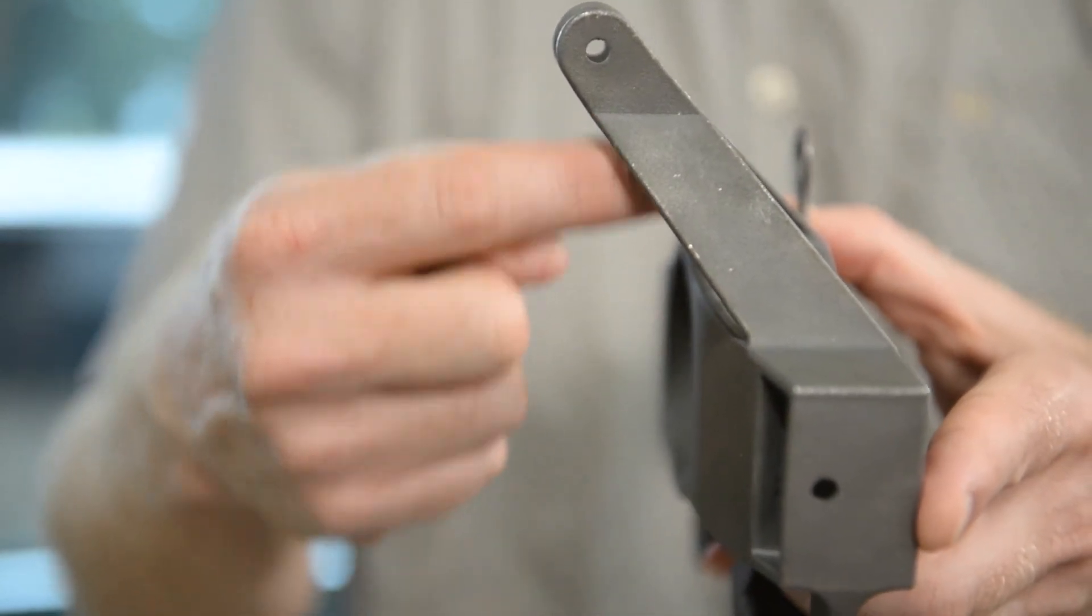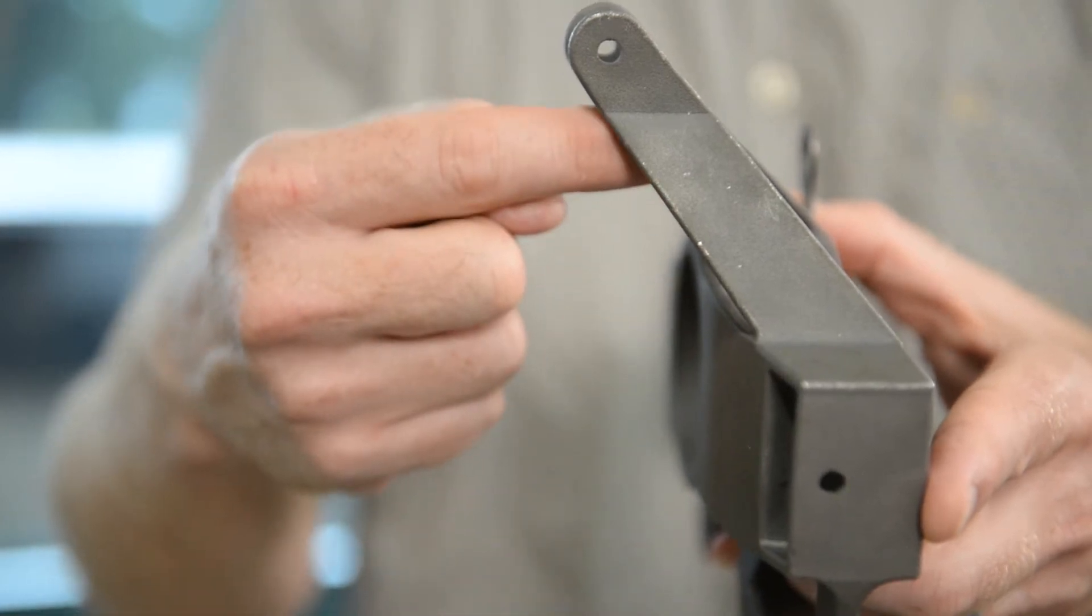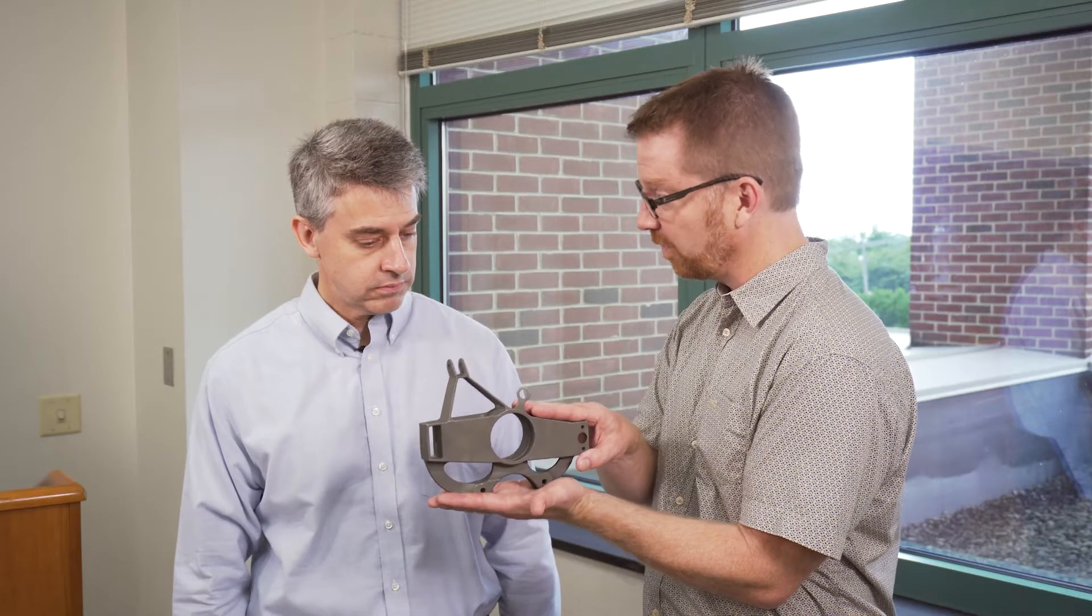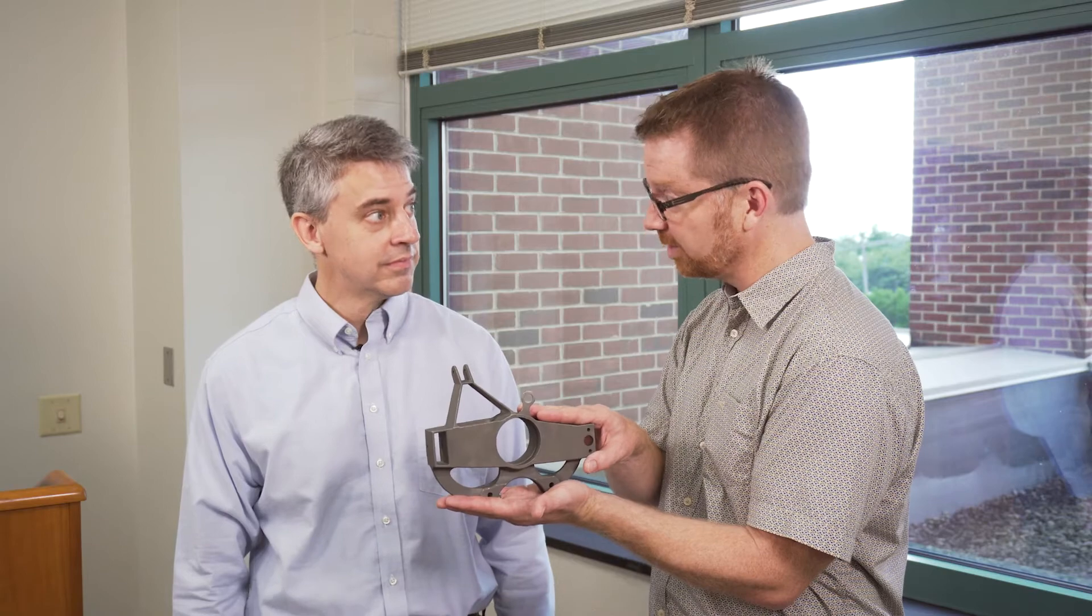So in the end, printing it vertically like this took 54 hours to build, of which about 30 hours of that was to create the supports, and it was about $2,000 in powder. So $1,500 was in the support structure. So over half of your build time and three quarters of your costs end up being scrap that gets removed from the actual part itself.